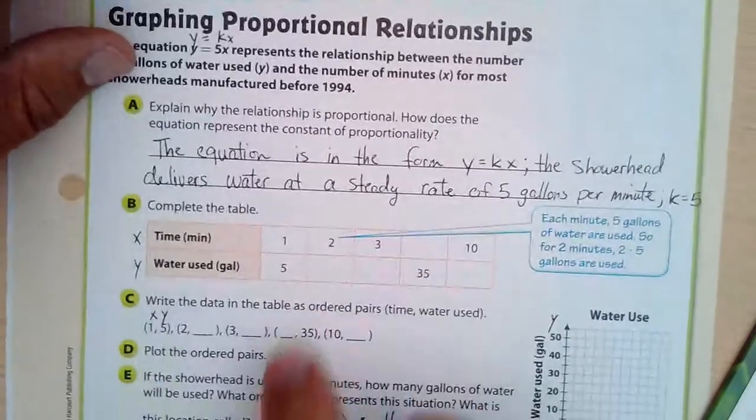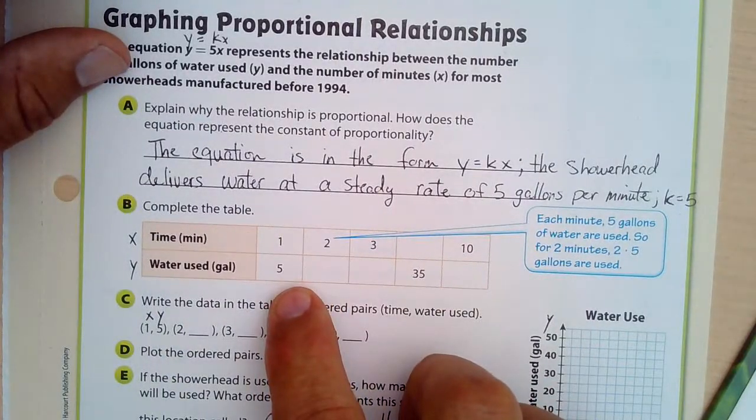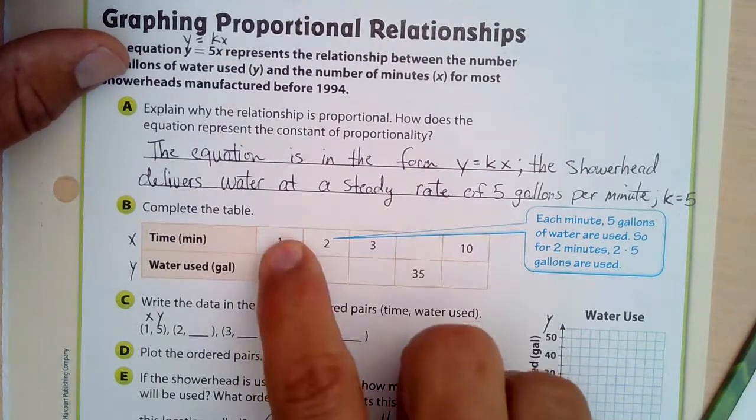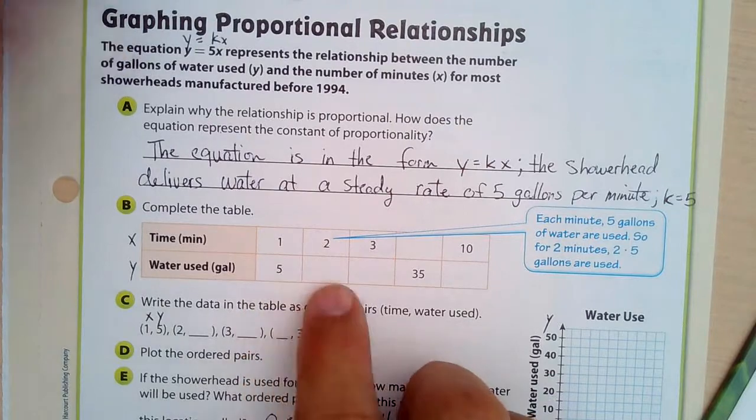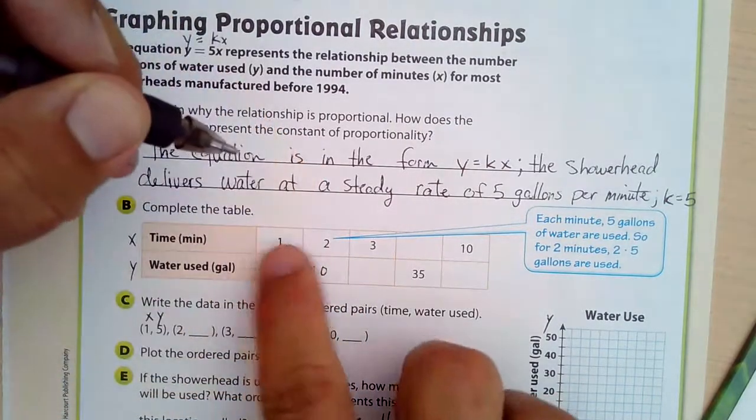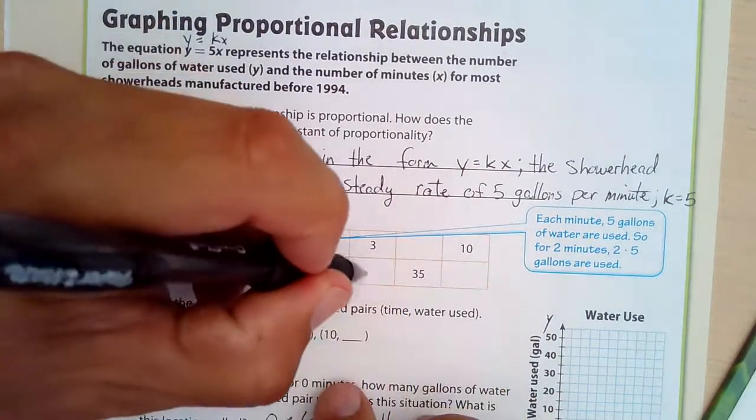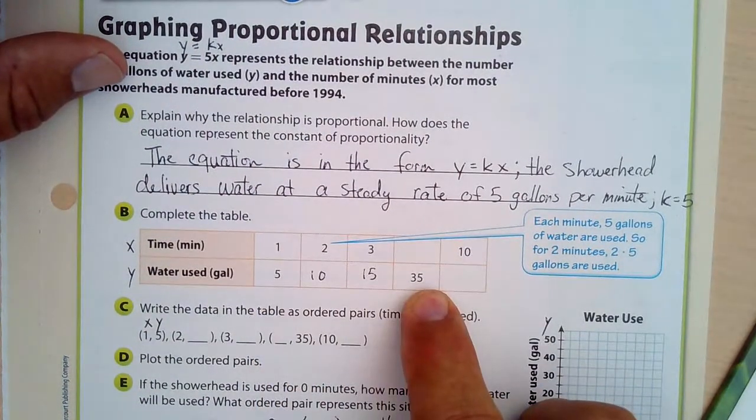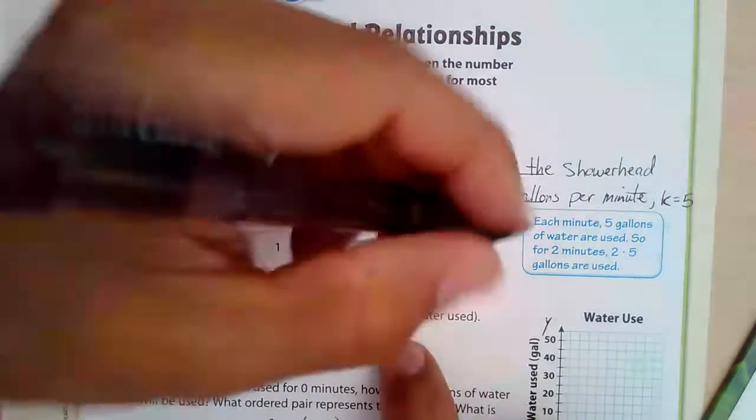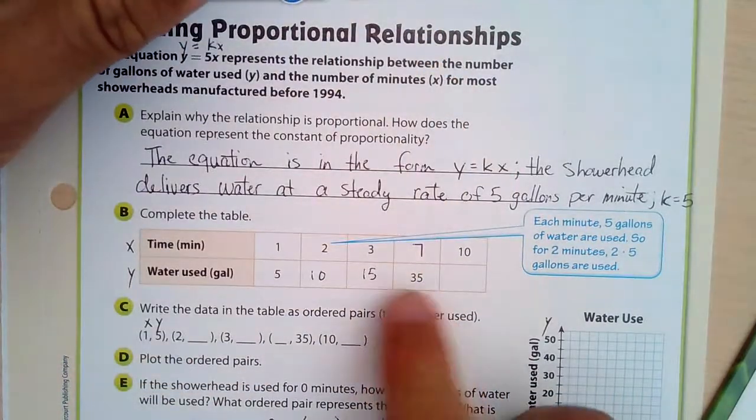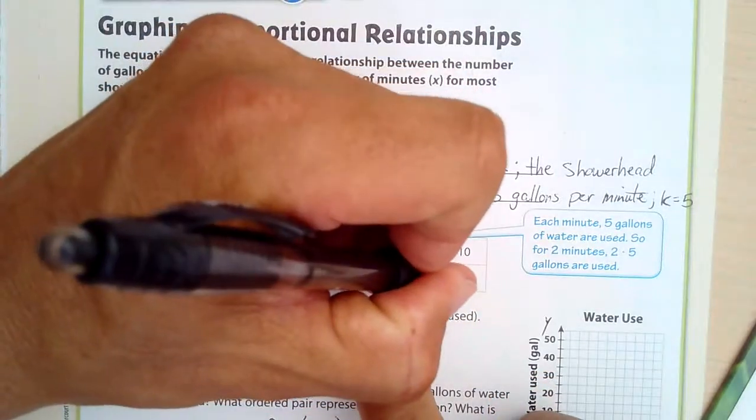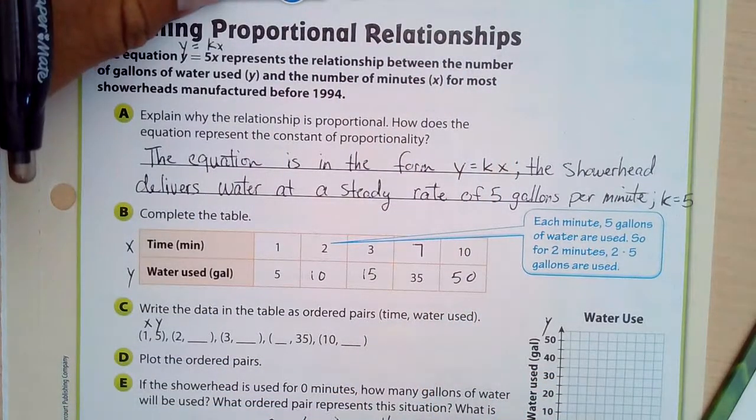So we're going to complete the table. k is 5, so that means 5 gallons for 1 minute. Let's double that, so this is 10. We'll triple this, so 5 gets tripled to 15. 5 goes into 35 seven times, so that must be 7. And then 1 times 10 is 10, so 5 times 10 is 50. We got all that information there.